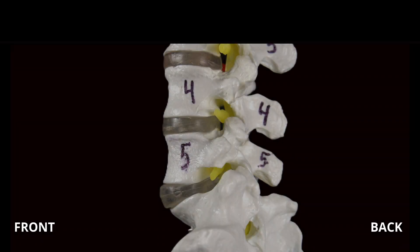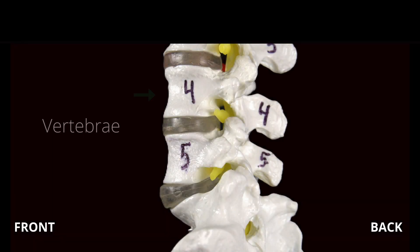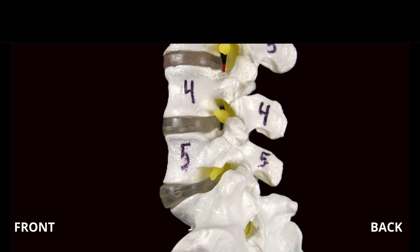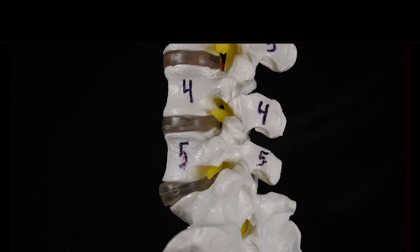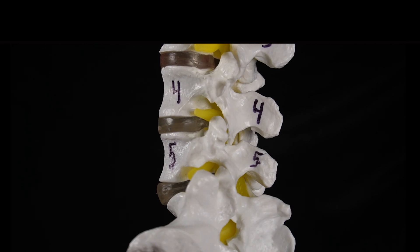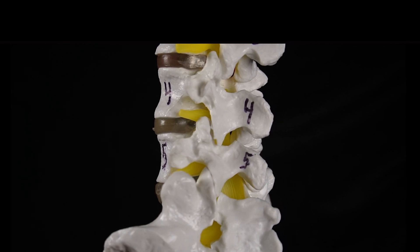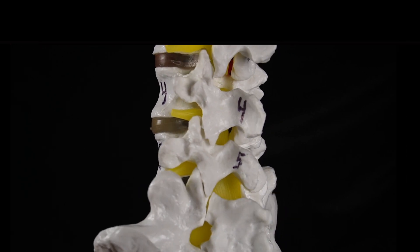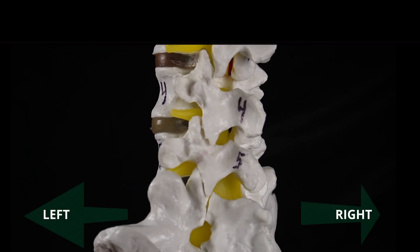The lower back, or lumbar spine, consists of five bones or vertebrae numbered L1 through L5, with soft cushions called discs between the bones. A pars fracture is a break in the bone at a very specific location called the pars articularis.